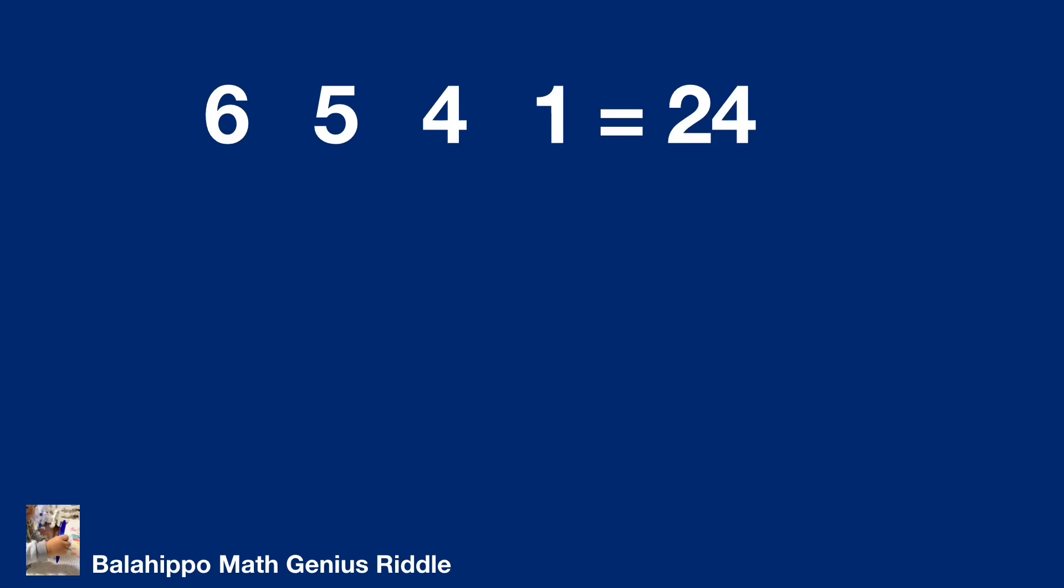Then, if 6 times a number equals 24, the number is 4. How to generate 4 from the numbers 5, 4, 1? I find square root of bracket 5 plus 4 bracket plus 1 equals square root of 9 plus 1 equals 3 plus 1 equals 4. This is the first solution we got.